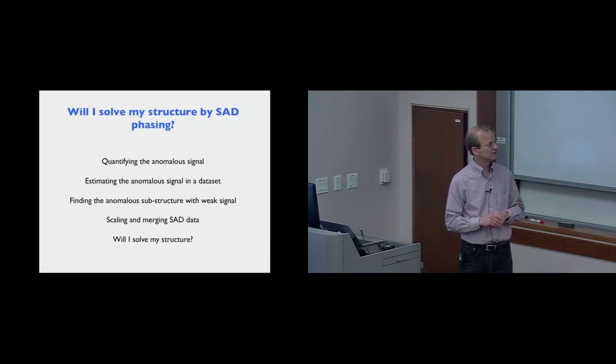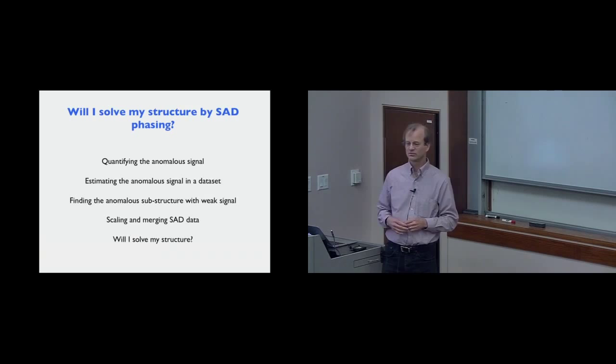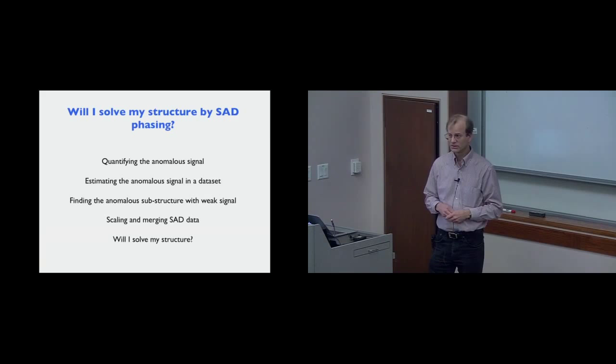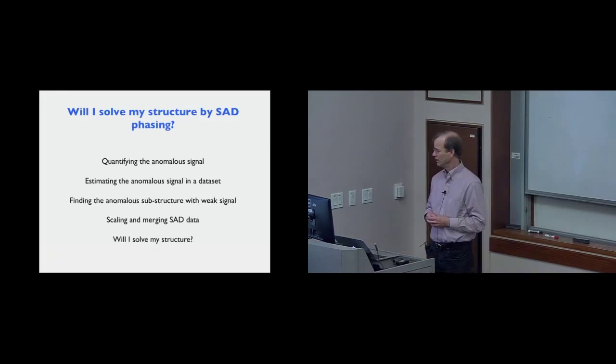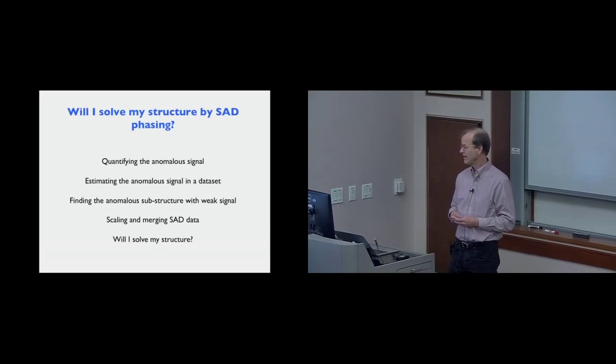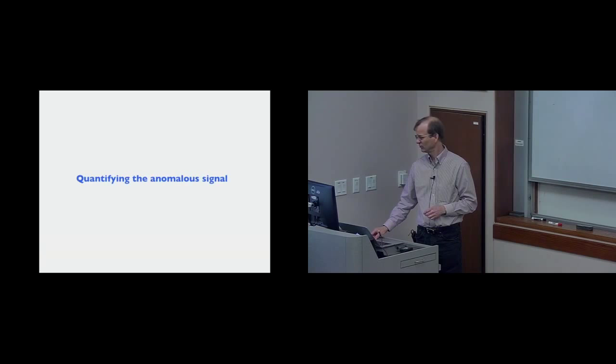Here's what I'm going to cover in the next few minutes. We're going to talk about quantifying the anomalous signal — this will amplify on what I talked about this morning and give more specifics, including how to estimate the anomalous signal in a data set. Then I'll talk about finding the heavy atom anomalous substructure and likelihood-based tools that make this much more powerful than previously. Then scaling and merging SAD data, will I solve my structure, and a little bit about automation of the whole process.